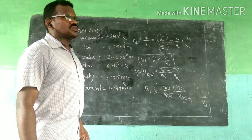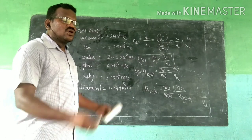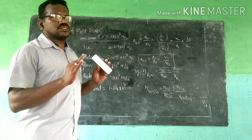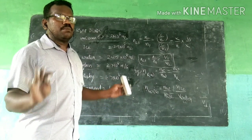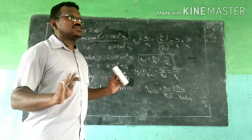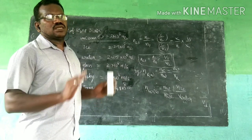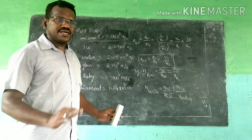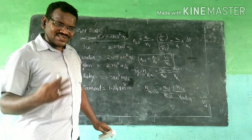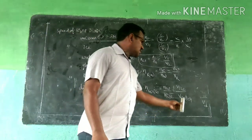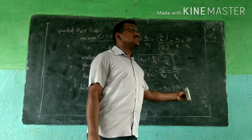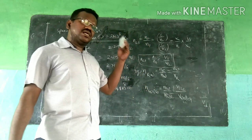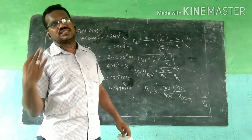These are the basic concepts in physics — absolute refractive index and relative refractive index. Both absolute refractive index and relative refractive index do not have units; they are simply a mere number, a numerical value, meaning they are dimensionless quantities. In absolute refractive index, we compare the velocity of light in a medium with respect to air. In relative refractive index, we compare the velocity of light in one medium with respect to another medium — both of them are media, whereas in absolute refractive index, one of the media is air.